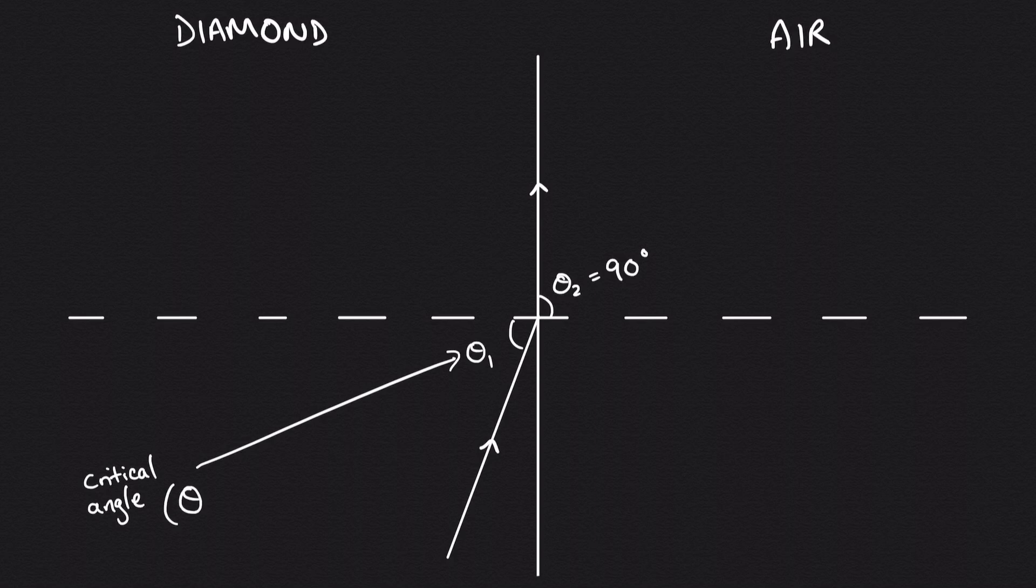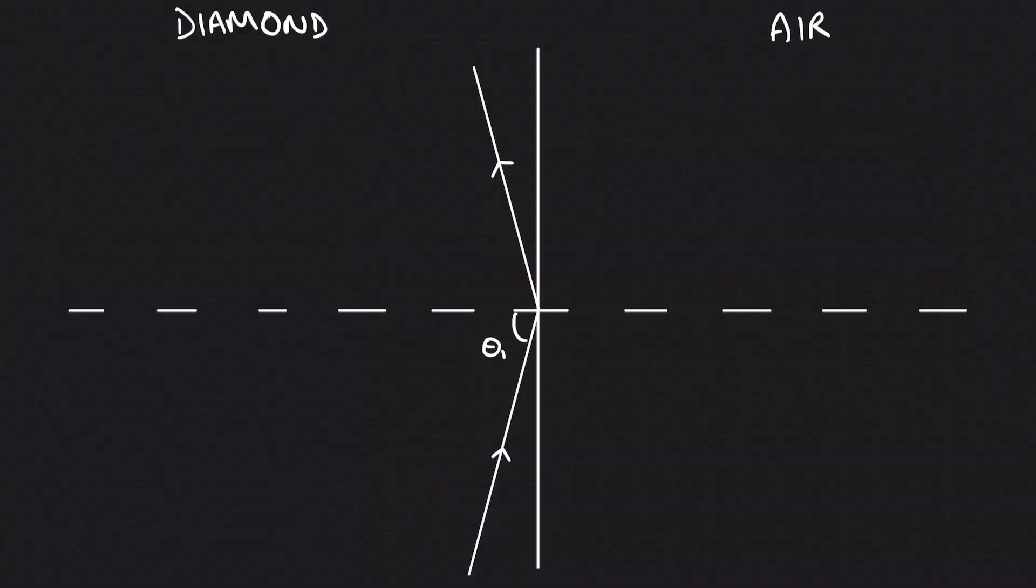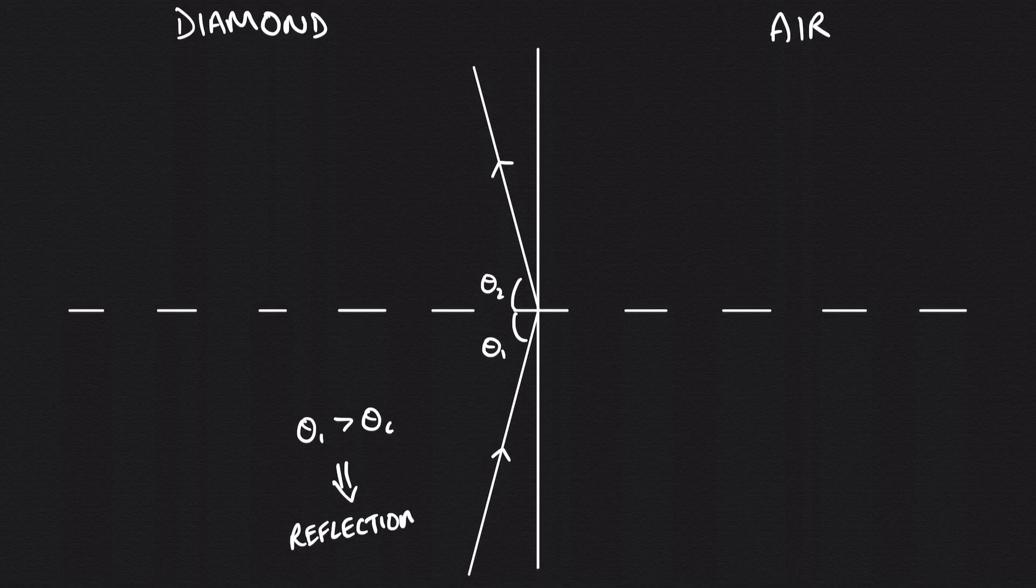The critical angle, theta c. The reason why this angle is critical is that as soon as the angle of incidence exceeds this angle, refraction no longer occurs and we get total internal reflection. So this allows the light to remain inside the diamond and get transmitted out in a bunch of different directions, almost as if the diamond were producing its own light.